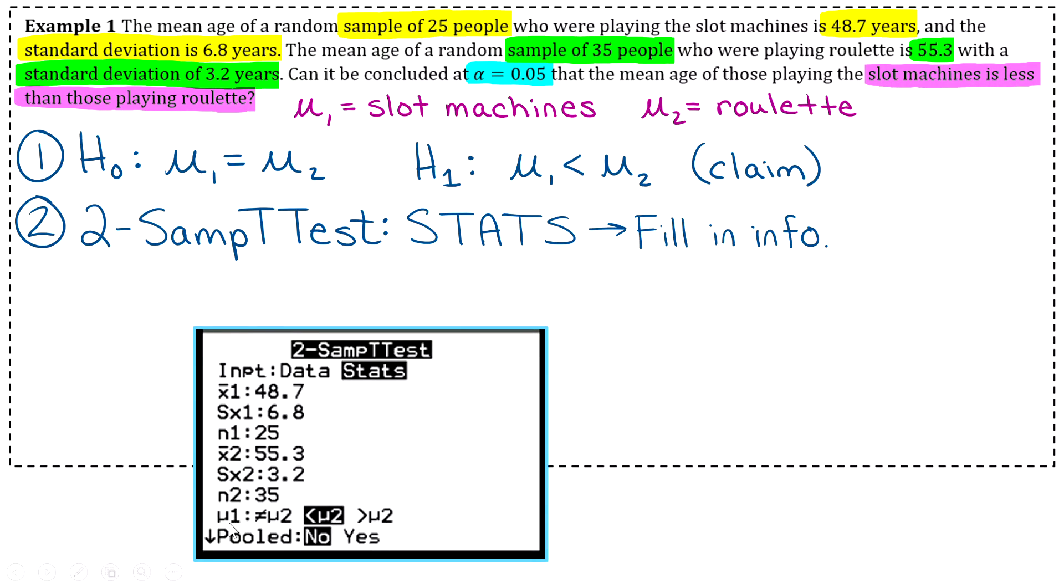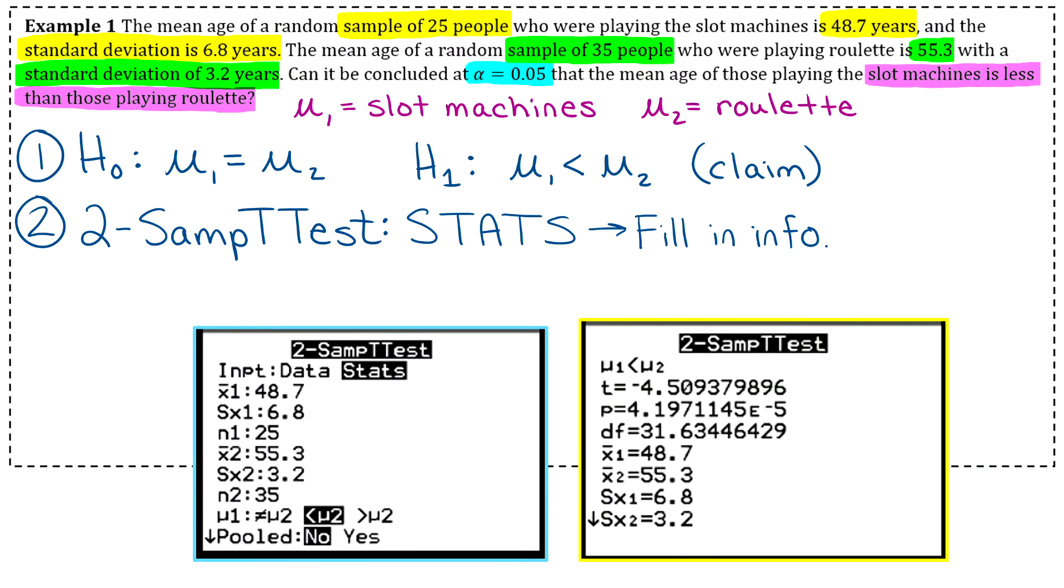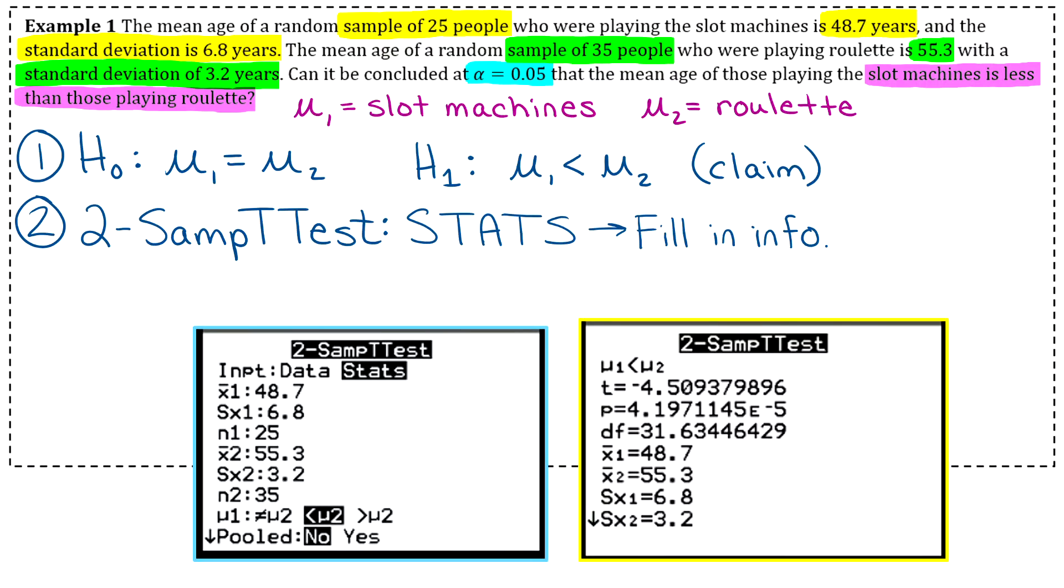Okay, and then for your alternative hypothesis, make sure you select the less than mu two sign. Okay, it always matches the one in your alternative hypothesis. And then for pooled, don't touch that. Just always leave that as no, we will never mess with that for the entire rest of the semester. Okay, and then you'll go down one more and click calculate. And then you should get a screen like I have on here.